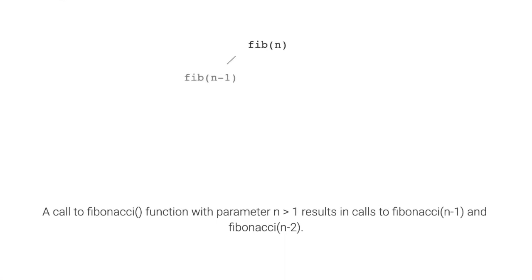A call to the Fibonacci function with parameter n greater than 1 results in calls to Fibonacci n minus 1 and Fibonacci n minus 2.